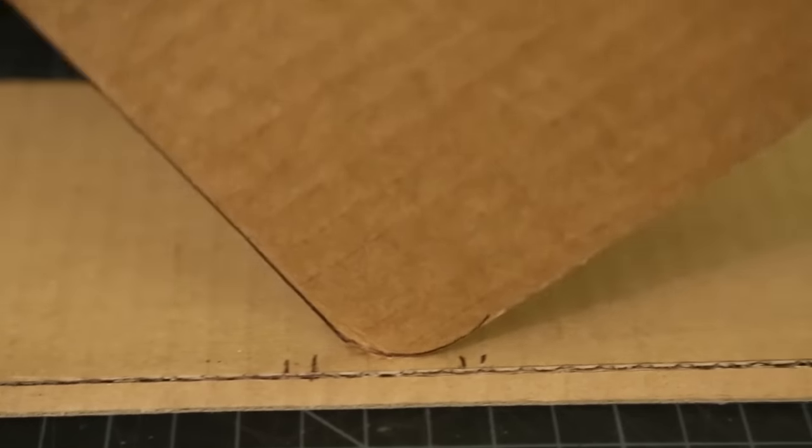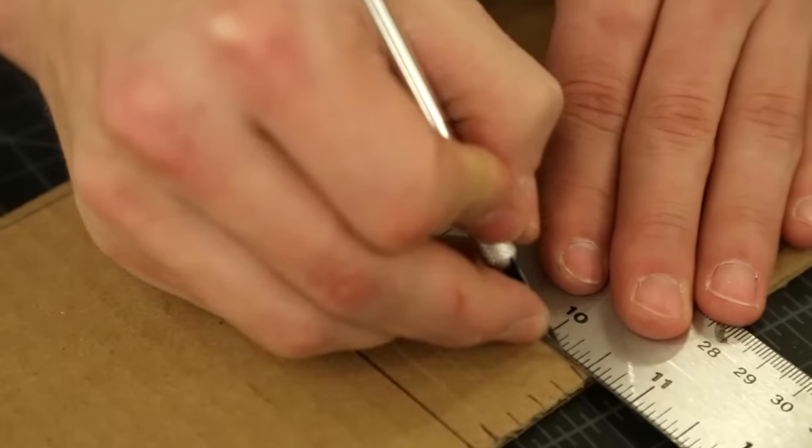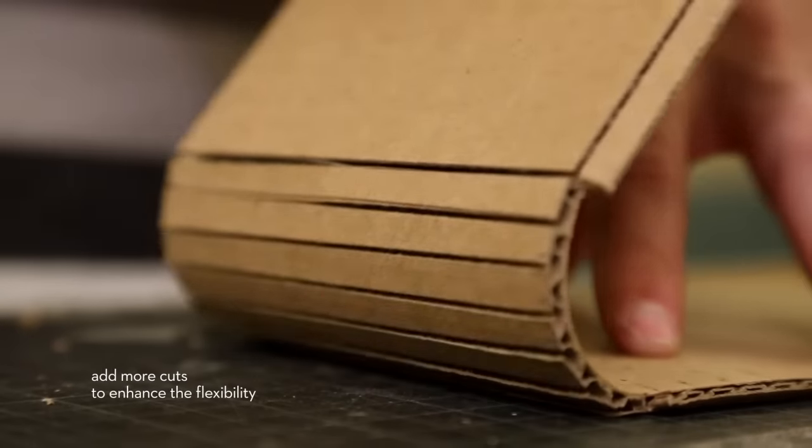In order to achieve these rounded edges I incorporated a technique called scoring where you cut just the surface but not quite all the way through and that lets you bend the material in various ways.